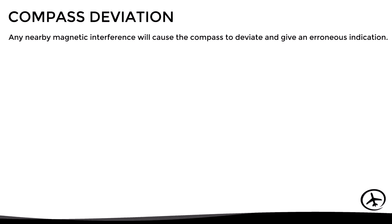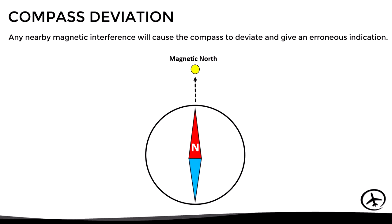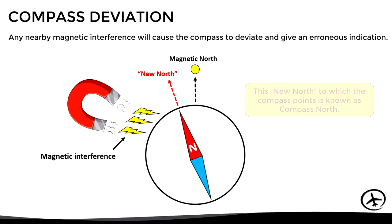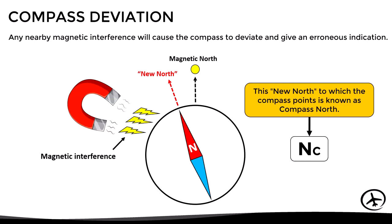Now let's move on to the next compass error: compass deviation. This error is caused because any nearby magnetic interference will cause the compass to deviate and give an erroneous indication. A compass is basically a magnet that uses the earth's magnetic field to align itself and point to magnetic north, so any external magnetic interference will cause it to deviate, pointing to a kind of new north. This new north to which the compass points is known as compass north, abbreviated as NC.